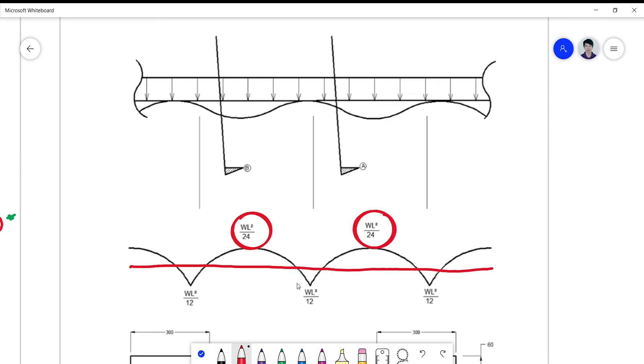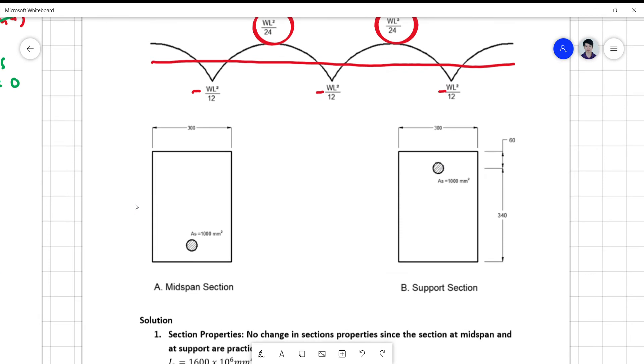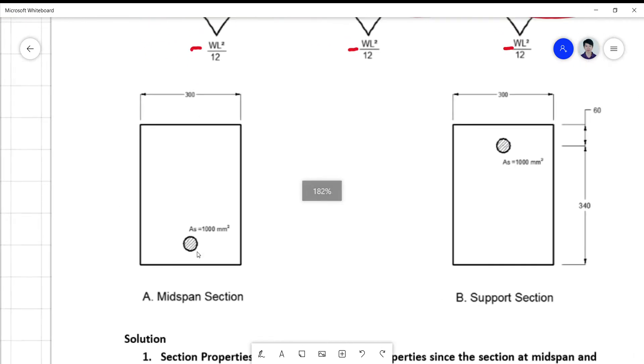At the support, the moment is negative WL squared over 12. Of course, as I told you, the negative sign does not mean anything but just to indicate that your moment is at the negative bending location of your diagram.